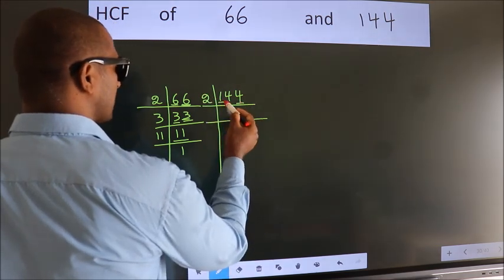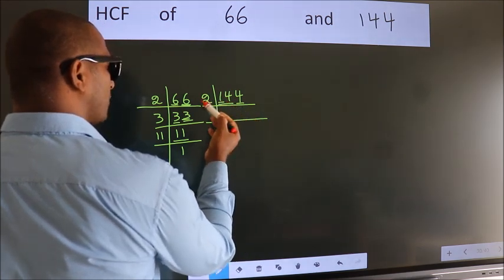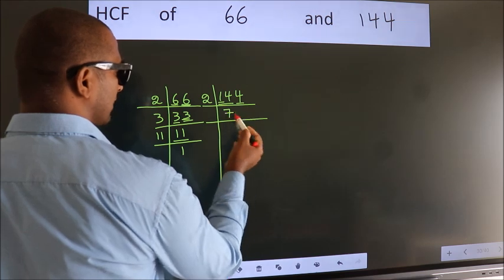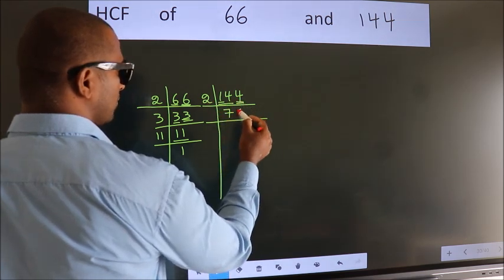First number 1, smaller than 2, so 2 numbers 14. When do we get 14 in 2 table? 2 times 7 is 14. The other number 4, when do we get 4 in 2 table? 2 times 2 is 4.